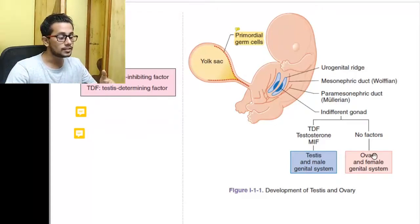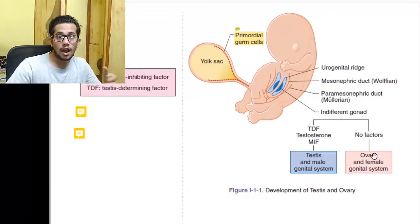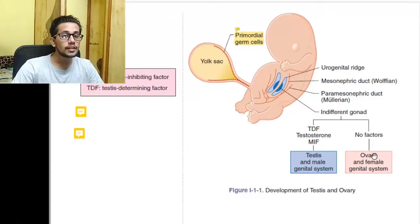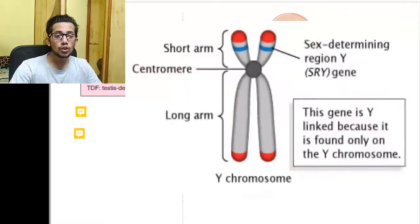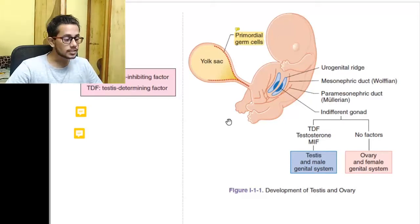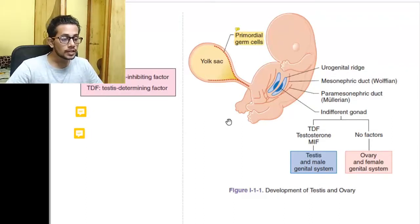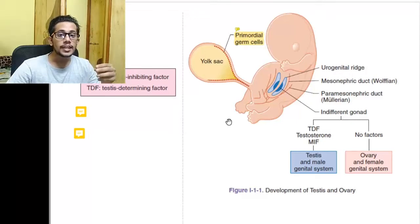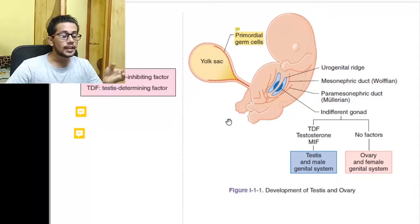For the gonad to become a testis, it needs a Y chromosome. On the short arm of the Y chromosome there is an SRY gene, which produces TDF — the testis determining factor. TDF helps make the testis, and the testis produces Sertoli cells, which then produce MIF. This MIF inhibits the production of the ovary, preventing the female genital system from forming and leaving the embryo with only the testis system.